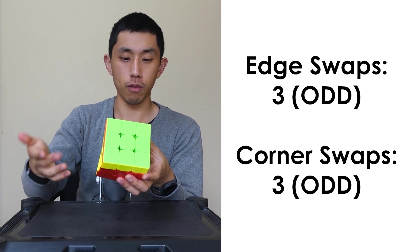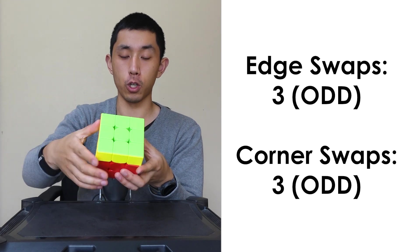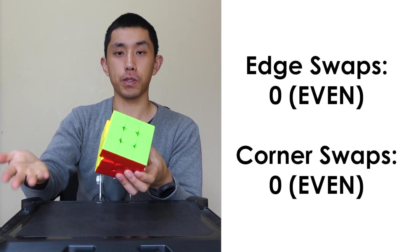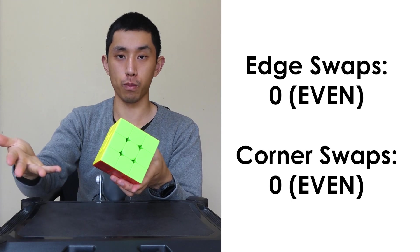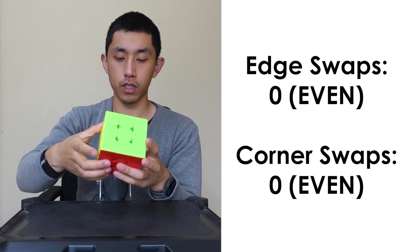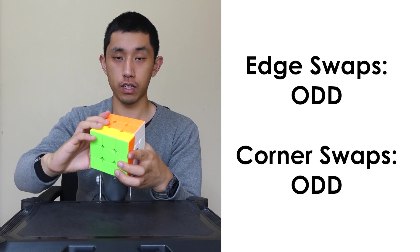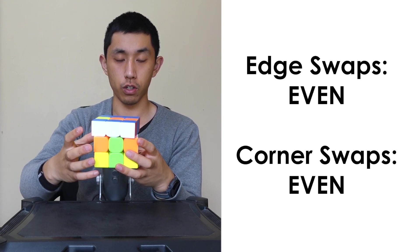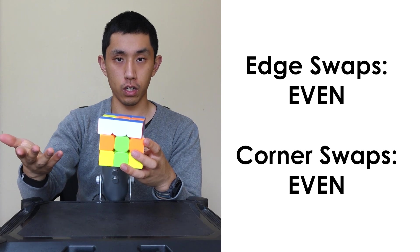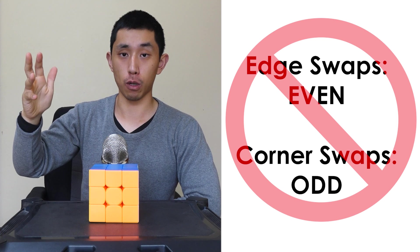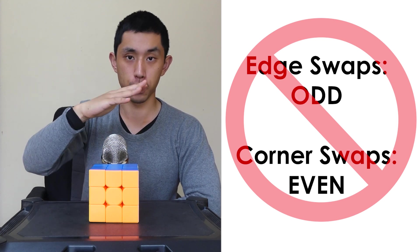The same thing once again. Both the amount of swaps you need would be odd for corners, odd for edges. This is obviously even because both require zero swaps. This applies no matter how you turn the cube. This would be odd, odd, even, even, odd, odd, even, even, and so on. This means that you'll never have an odd number of swaps for corners and even number for edges and vice versa.